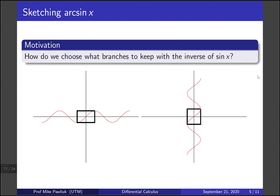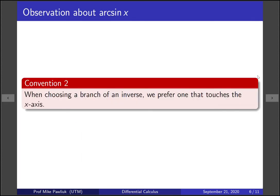And in a sense it kind of feels the most natural. And if we were to put this in words, we might say that we chose this one because it goes through the origin. So that leads us to our next convention. When choosing a branch of an inverse, we prefer the one that touches the x-axis.